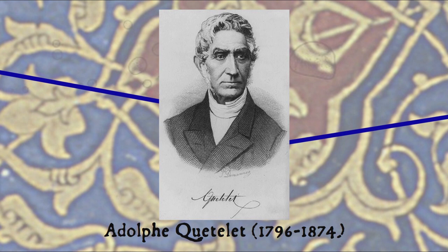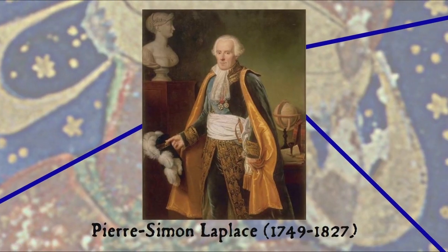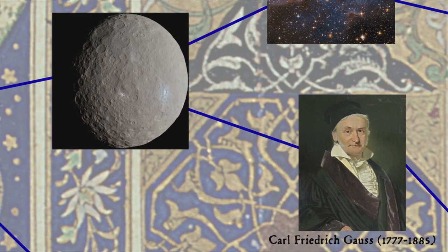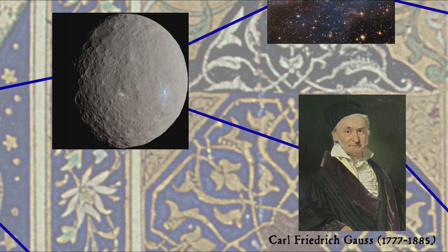It wasn't until probability maths were applied to statistics that statistics as a field could begin in earnest. One of the first to do this was Belgian astronomer and mathematician Adolphe Quetelet, who was deeply influenced by the astronomy work of Pierre-Simon Laplace, who did most of the legwork on Bayes' theorem — which was very important to probability. As an astronomer, Quetelet founded and directed the Brussels Observatory and studied periodicity in celestial objects. At the time, the probability maths were mainly being used in astronomy, like Carl Friedrich Gauss using the method of least squares to predict the orbit of Ceres.